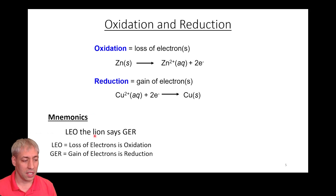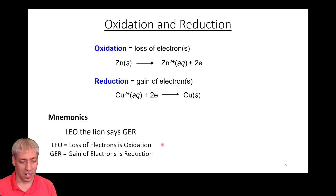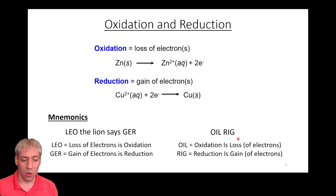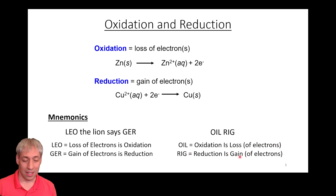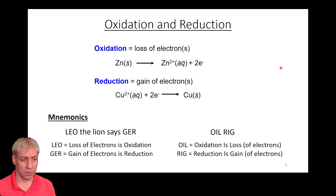This can be confusing because adding electrons makes a number less positive. There are mnemonics to help: 'Leo the lion says GER' — Loss of Electrons is Oxidation, Gain of Electrons is Reduction. The other one is 'OIL RIG' — Oxidation Is Loss, Reduction Is Gain. It doesn't matter how you remember it, but it's really important: oxidation means losing electrons, reduction means gaining electrons.